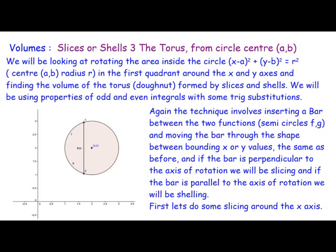We're also going to use some trig substitutions, especially for cos squared — cos²θ = ½(1 + cos 2θ). That's the substitution we're going to be using. I've actually divided the circle into two semicircles — the top half and the bottom half — and that's where the F and G functions come in.